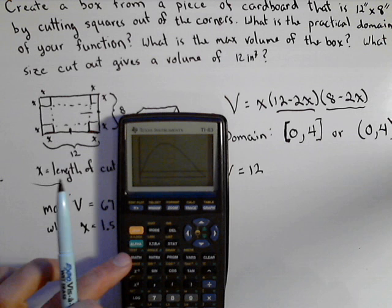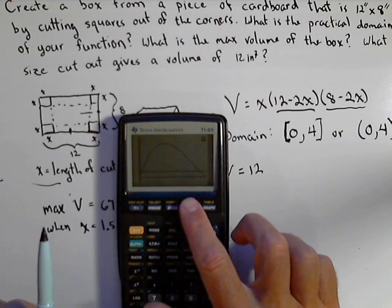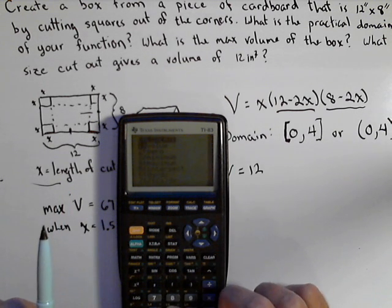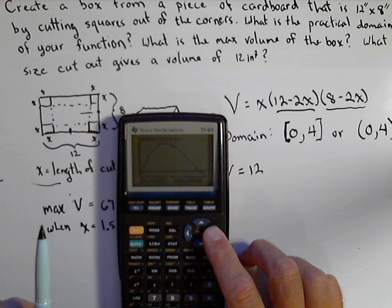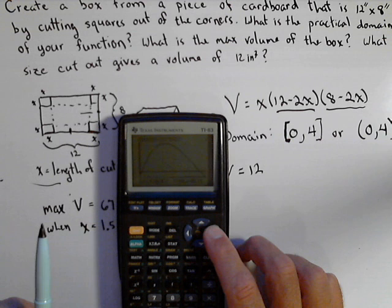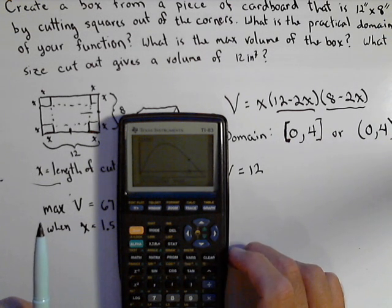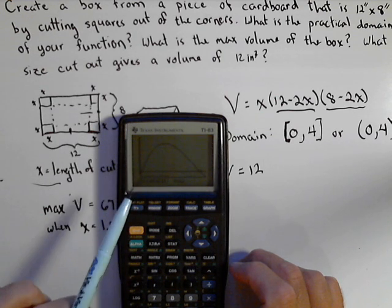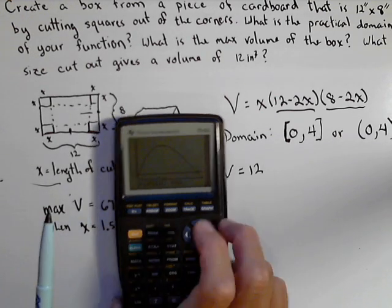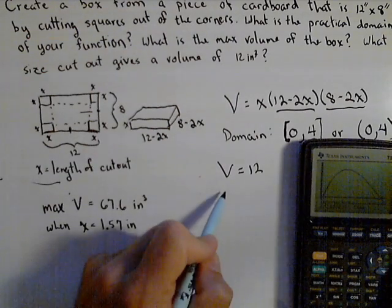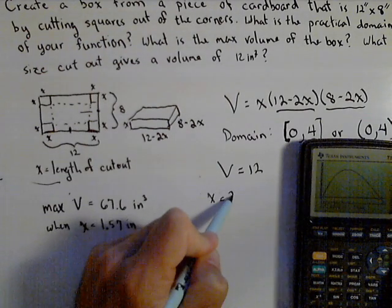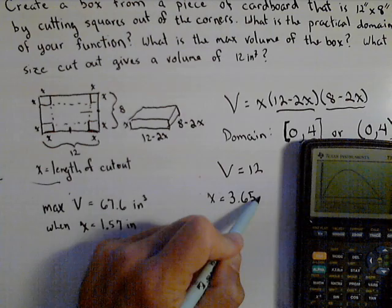Now what we're calculating are intersection points. So I'm going to go second, calculate, intersect, number 5. And it's going to do first curve and second curve. We just need the two curves. The one you go closer to is the one you'll get. So to get the larger one, we see that it happens at 3.65 inches. So x equals 3.65 inches.